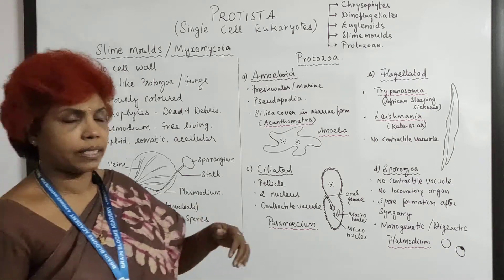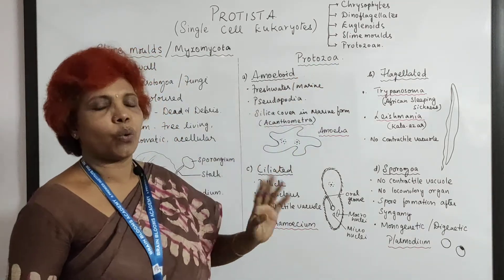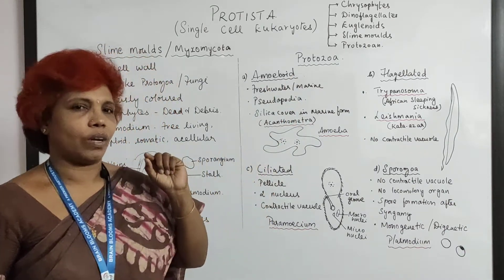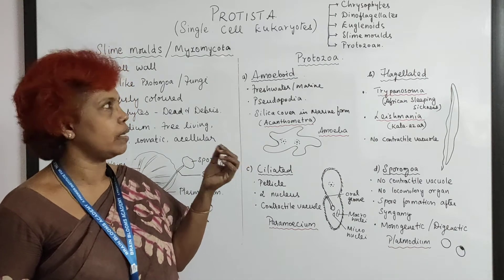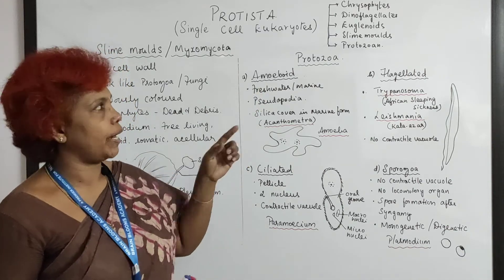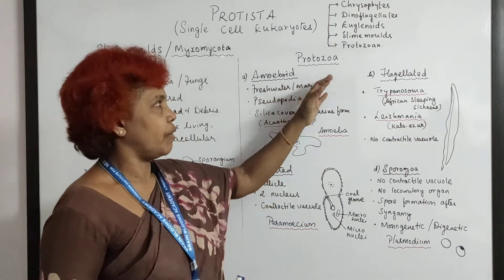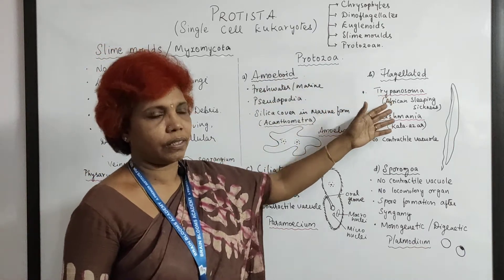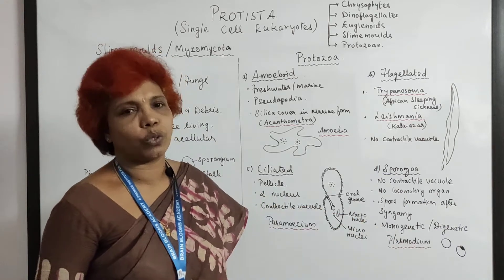Moving to the next division: protozoans. Proto means first, single cellular — they are essentially animalcules. These groups are classified on the basis of their locomotory organ. The four groups are: first, amoeboid; second, flagellated; third, ciliated; and fourth, sporozoans.